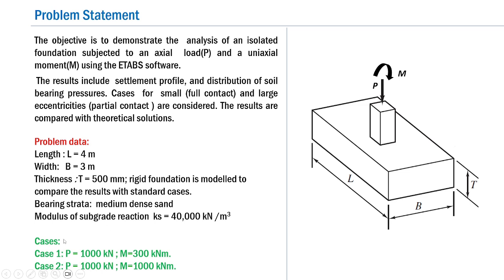The two cases involve values of P and M that result in a small and a large eccentricity. In Case 1, P equals 1000 kN and M equals 300 kN·m, giving eccentricity E of 0.3 meters, which is less than L/6. In Case 2, P equals 1000 kN and M equals 1000 kN·m, with E equal to 1 meter, greater than L/6, corresponding to large eccentricity.